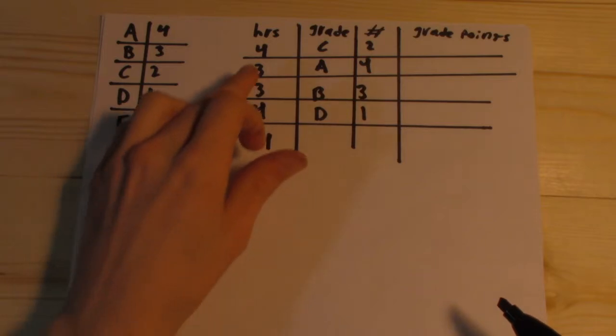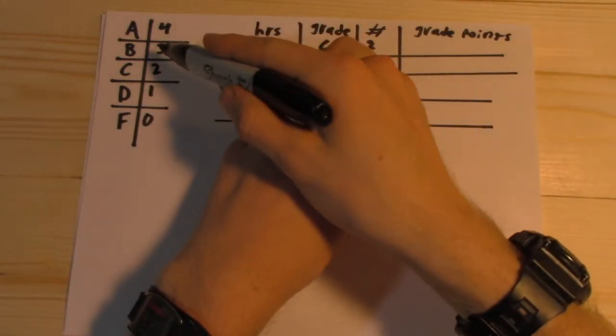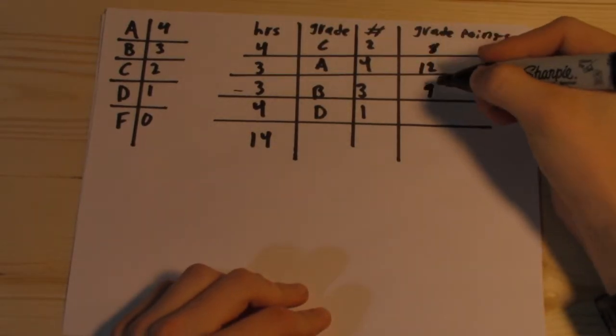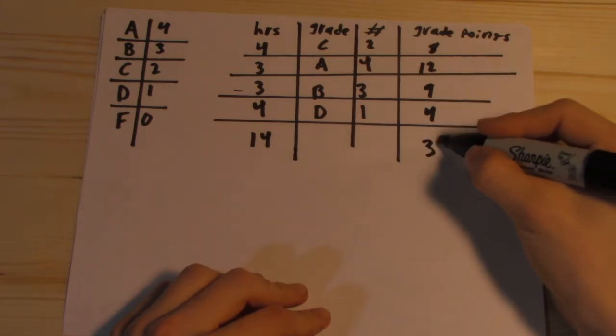Now you're going to take the number of credit hours for that course and multiply it by the value of the letter grade, which is given over here. That is going to give us 8, 12, 9, and 4. Our total grade points is going to be 33 grade points.